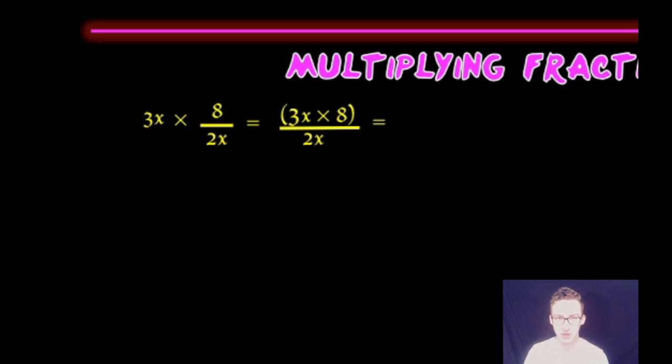We're going to multiply across the top, multiply across the bottom, and so we end up with 3x times eight over 2x. We can simplify that further to 24x over 2x, which further reduces to 12.